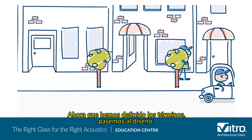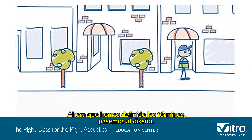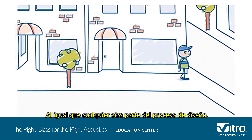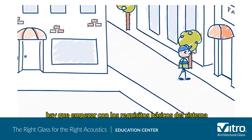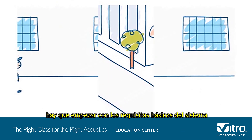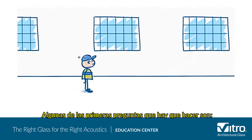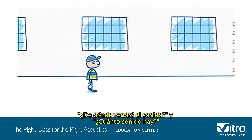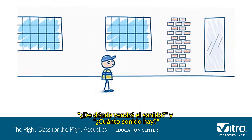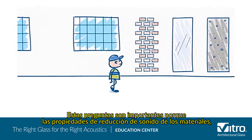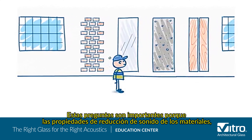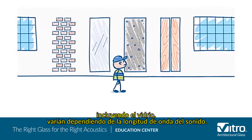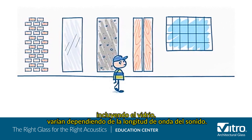Now that we've defined the terms, let's move into design. Just like any other part of the design process, you need to start with the basic system requirements. Some of the first questions to ask are: where will the sound come from and how much sound is there? These questions are important because the sound reduction properties of materials, including glass, vary depending on the wavelength of the sound.